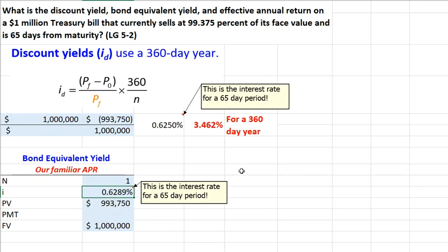This is basically telling us that we will be earning 0.6289% over a 65-day period. But we really don't care about 65-day interest rates or two-month interest rates. We want an APR.